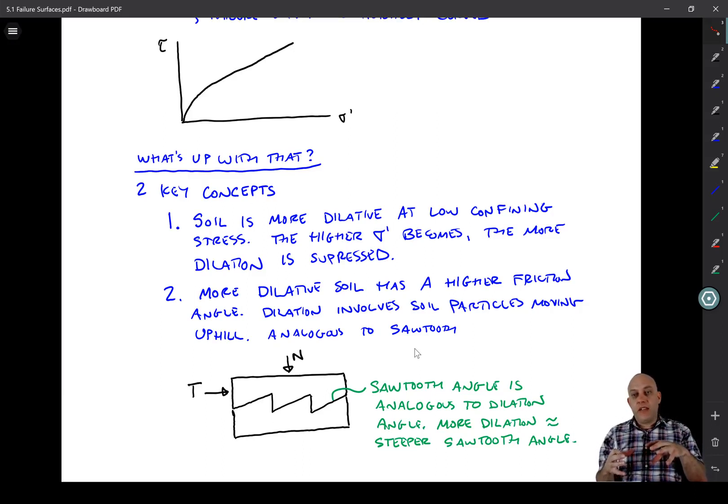If you take a dense sand and put more confining pressure on it, it will become less dilated. Therefore, it's less dense in a way. Similarly, at low confining pressure, it might be really strongly dilated. Alright, now the second concept is that dilation has the effect of increasing the friction angle.